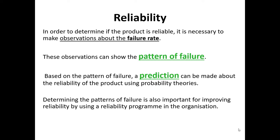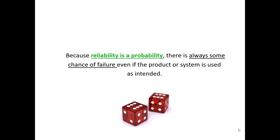In your organizations, if you design and develop products, you'll have prototypes that will be tested by engineers. They will make observations around when the product might fail and make predictions of when that could potentially happen. That's how companies come up with their warranties for a product — stating the predicted lifespan — by doing prototype testing and experiments around failure rates. Because reliability is a probability, there is always some chance of failure, even if a product or system is used as intended.